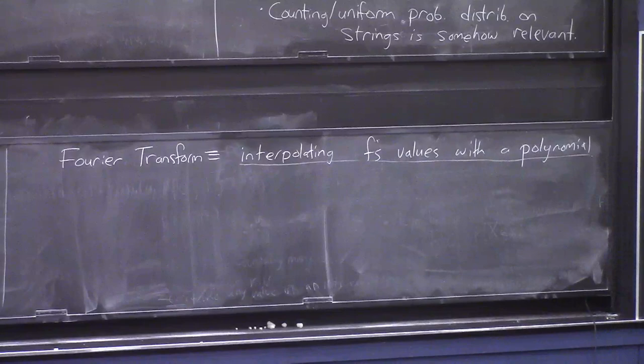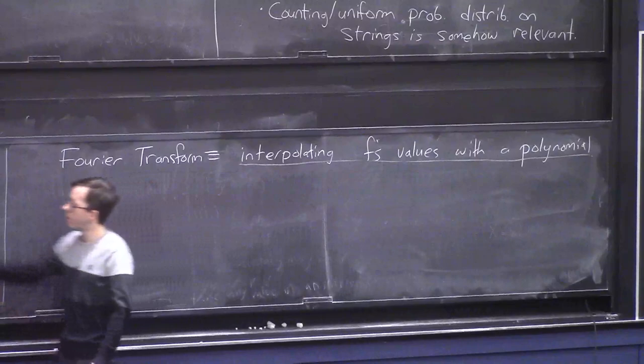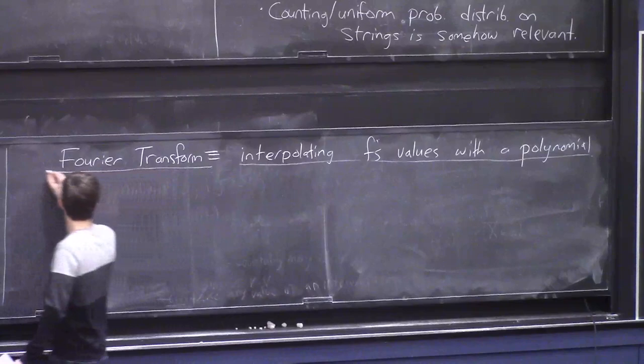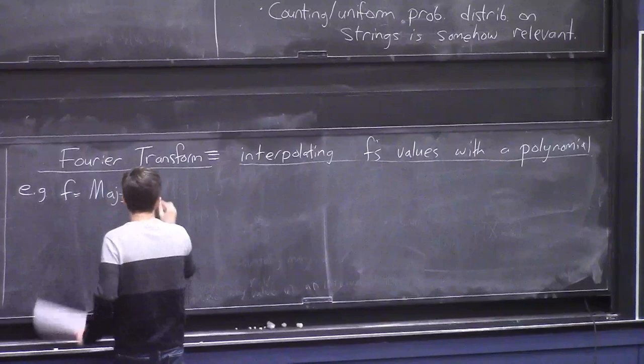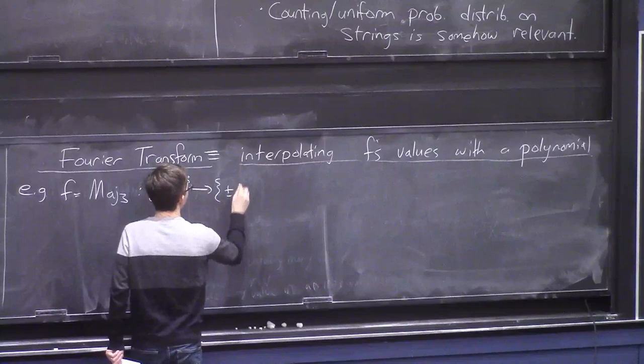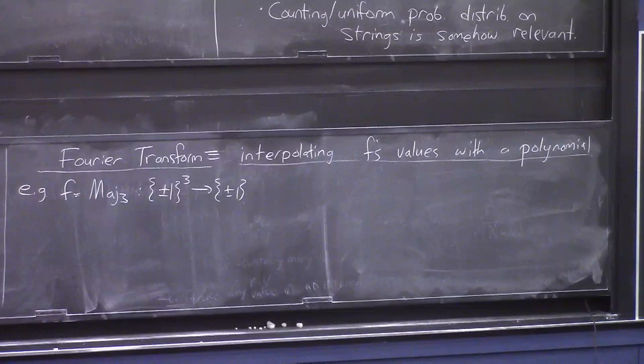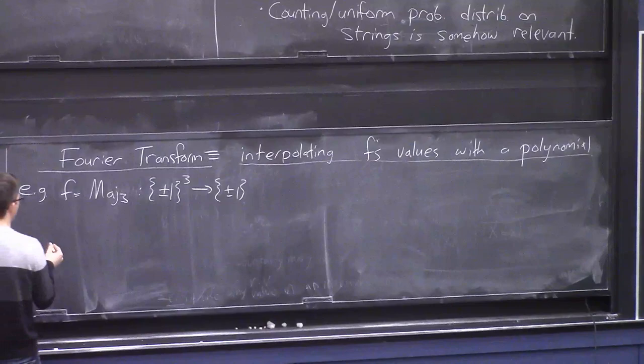The main difference from last time is that last time we were talking about univariate polynomials, and in this lecture we're going to be talking about n-variate polynomials. I'll start with a simple example: let's say F is the majority-of-3 function. It maps three bits, written as {±1}^3, into ±1. The output on a bit string of length 3 is just the more frequent truth value.